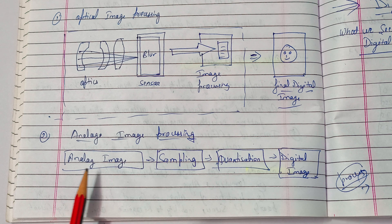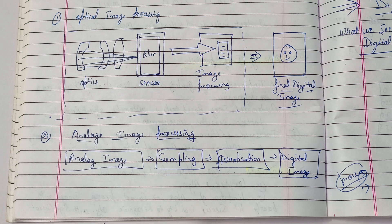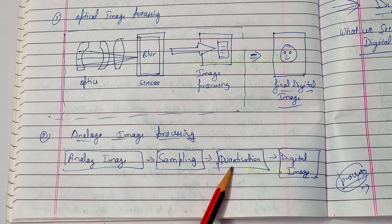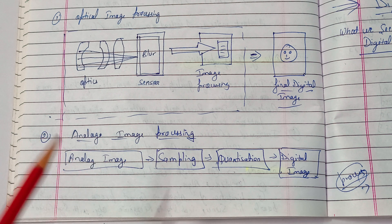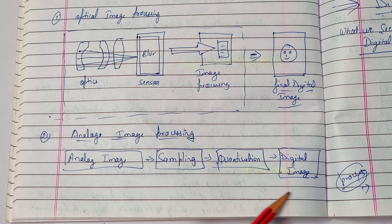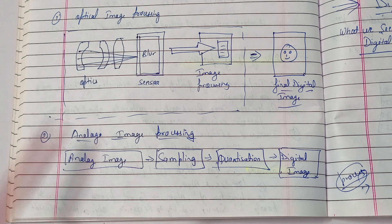Now let's talk about analog image processing. In analog image processing, we do sampling — breaking the signal down into a particular form on which we can do processing. After sampling, we do quantization — again breaking down and processing further. After that, it is converted into a digital image. The main goal of analog image processing is just to convert the signal into a digital image so we can apply further processing on it.